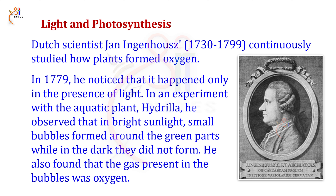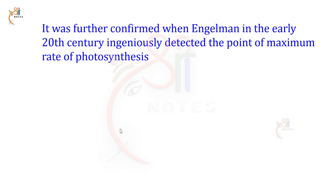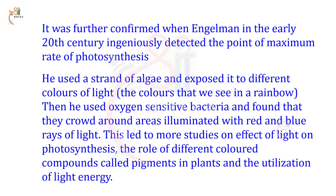In the early 20th century, Ingenhousz detected the point of maximum rate of photosynthesis. He used a strand of algae and exposed it to different colors of light. Then he used oxygen-sensitive bacteria and found that they crowded around areas illuminated with red and blue rays of light. This led to more studies on the effect of light on photosynthesis, the role of different colored compounds called pigments in plants, and the utilization of light energy.